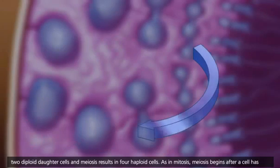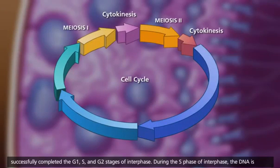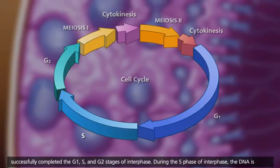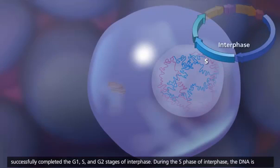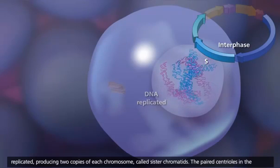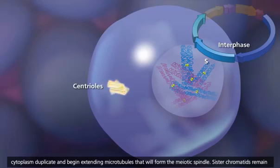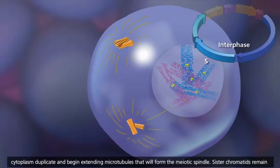As in mitosis, meiosis begins after a cell has successfully completed the G1, S, and G2 stages of interphase. During the S phase of interphase, the DNA is replicated, producing two copies of each chromosome called sister chromatids. The paired centrioles in the cytoplasm duplicate and begin extending microtubules that will form the meiotic spindle.